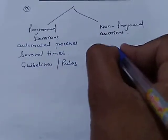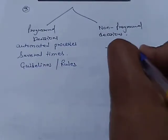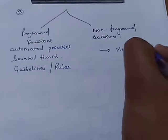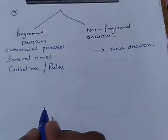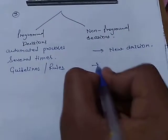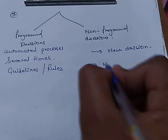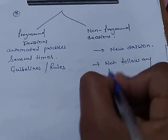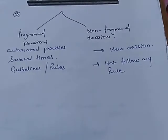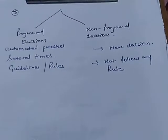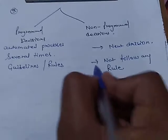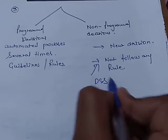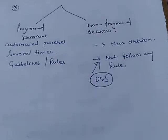Non-programmed decisions always use a new decision to solve a problem. They do not follow any rule or guideline. DSS basically uses, or mostly uses, non-programmed decisions.